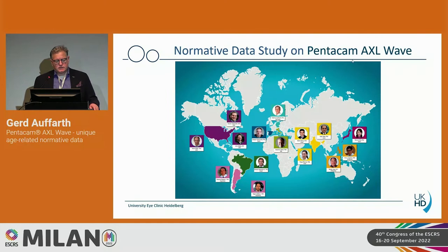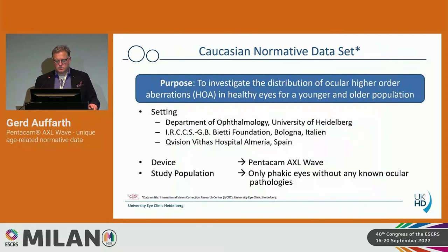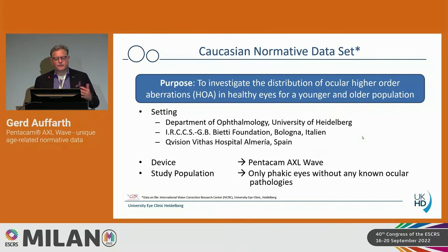Before going into clinical cases, I want to inform you about the normative data study group we have formed with Oculus. We are attempting to gather data from all over the world — a global effort across all continents. We have groups participating and are collecting data now. We want to set the standard for what is normal, because we measure so many things and it's important to know whether a measurement is normal, how it relates to age, and how it changes with pupil changes. We're starting with a Caucasian normative dataset from Germany, Italy, and Spain — Pentacam AXL Wave data in only phakic eyes without any pathology — but we want this on a global scale.